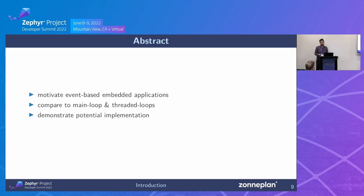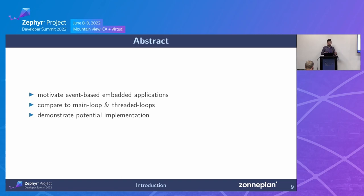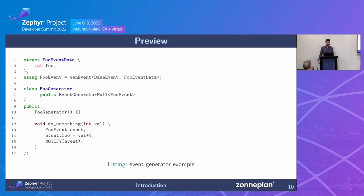Today I want to motivate why event-based architecture may be interesting for you, what we've learned, how we implemented it, and what the main benefits are. I'll compare it to main loops and thread loops, since those are probably concepts you're most familiar with. I'll also show a little bit how our implementation looks, but it's really mostly about the concept itself.